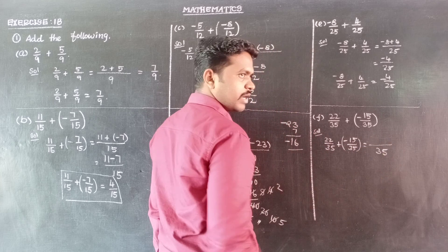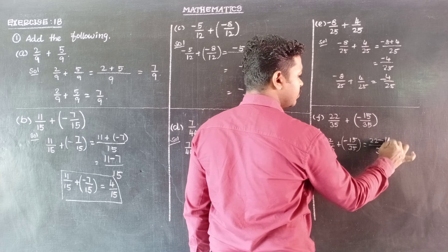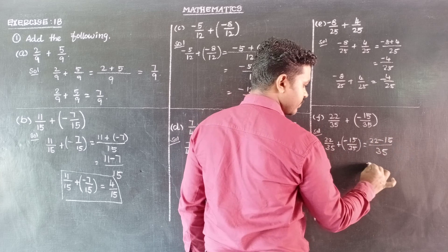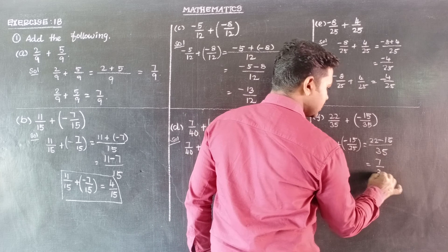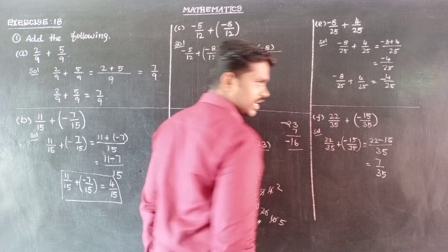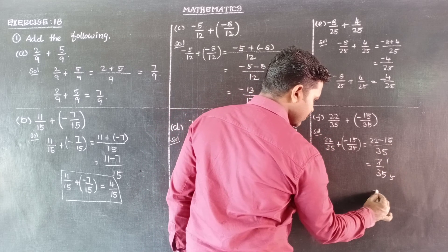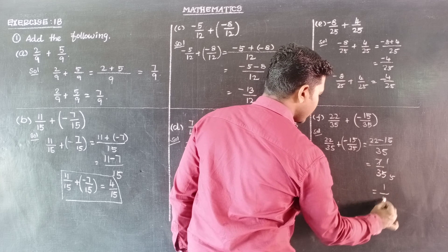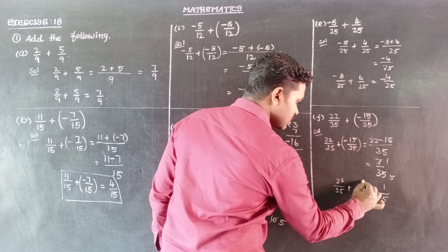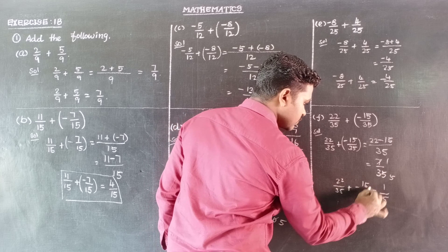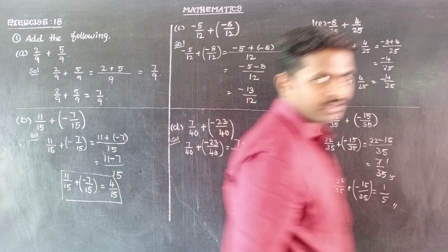Next last one, subdivision F: 22 by 35 plus minus 15 by 35. Plus into minus is minus, so 22 minus 15, that is 7 by 35. So 7 and 35 cancel — 7 ones are 7, 7 fives are 35 — that is 1 by 5. So 22 by 35 plus minus 15 by 35 is equal to 1 by 5.